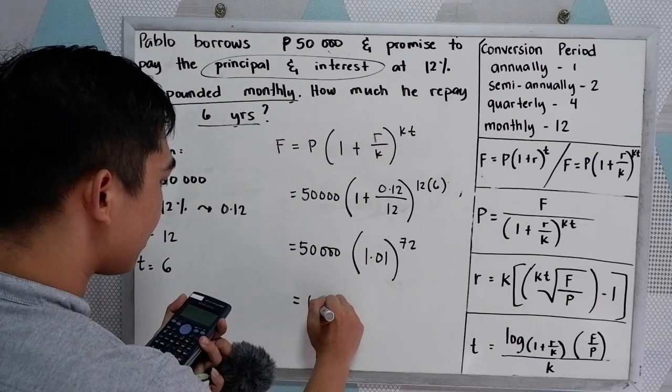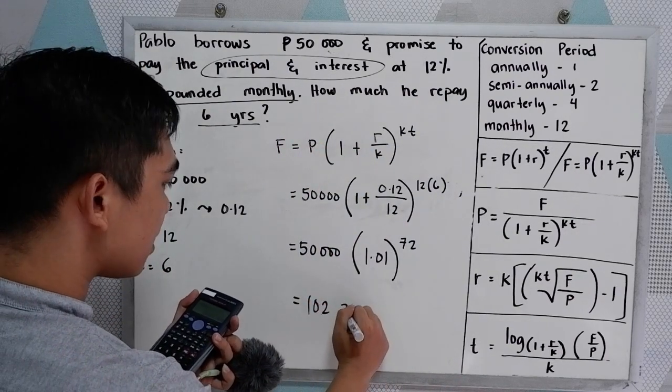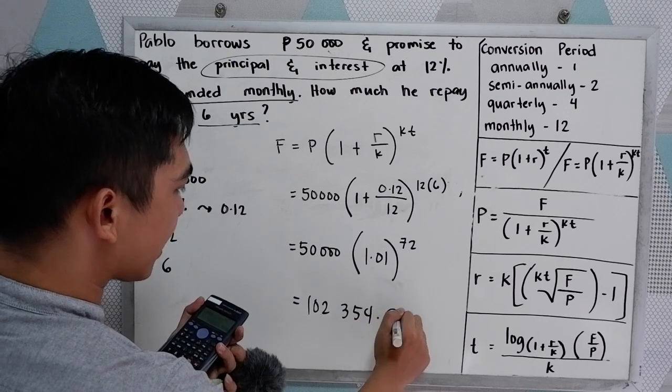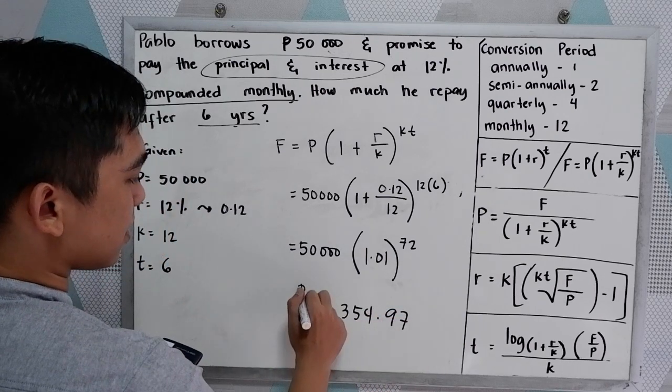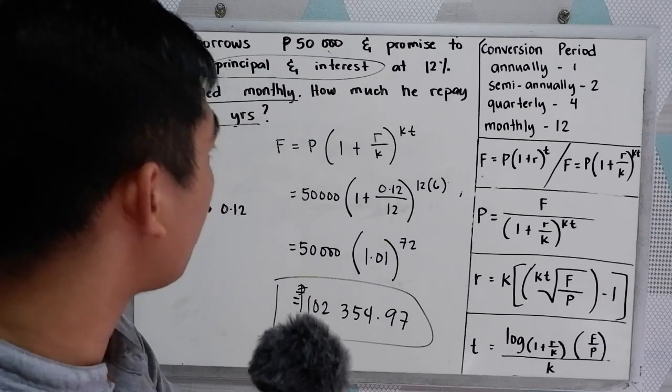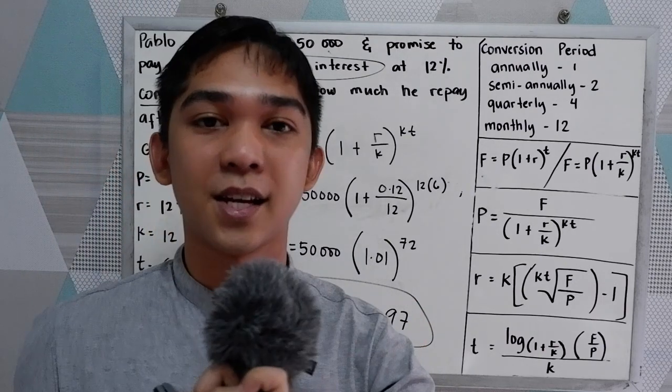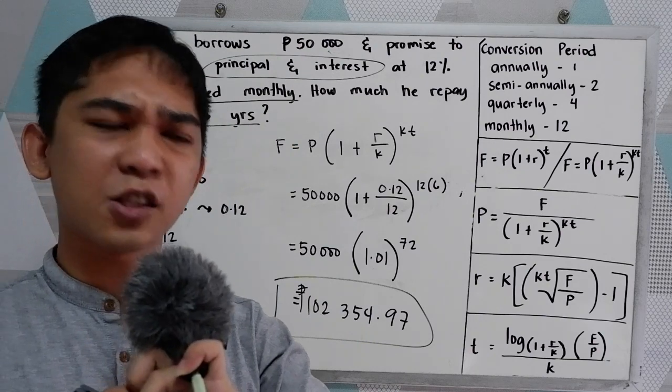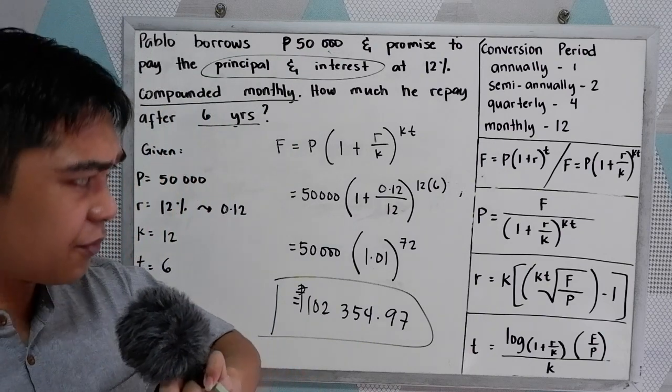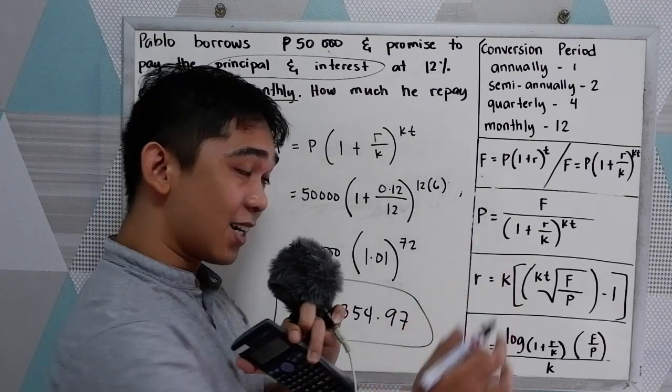This will be the money that will be returned, or repaid, after six years. Now, in our next problem, what if the missing is the principal?